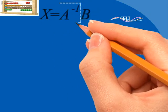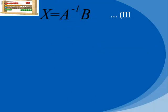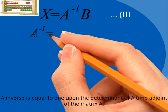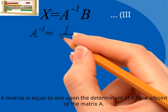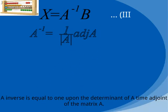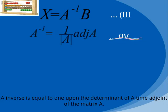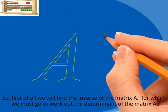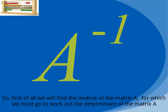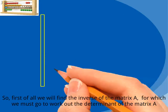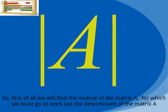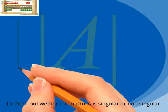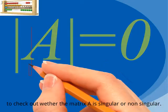In this equation, we first need to find the inverse of the matrix A. That is, A inverse is equal to 1 over the determinant of A, times the adjoint of the matrix A. First of all we find the inverse of matrix A, for which we must work out the determinant of matrix A to check whether matrix A is singular or non-singular.